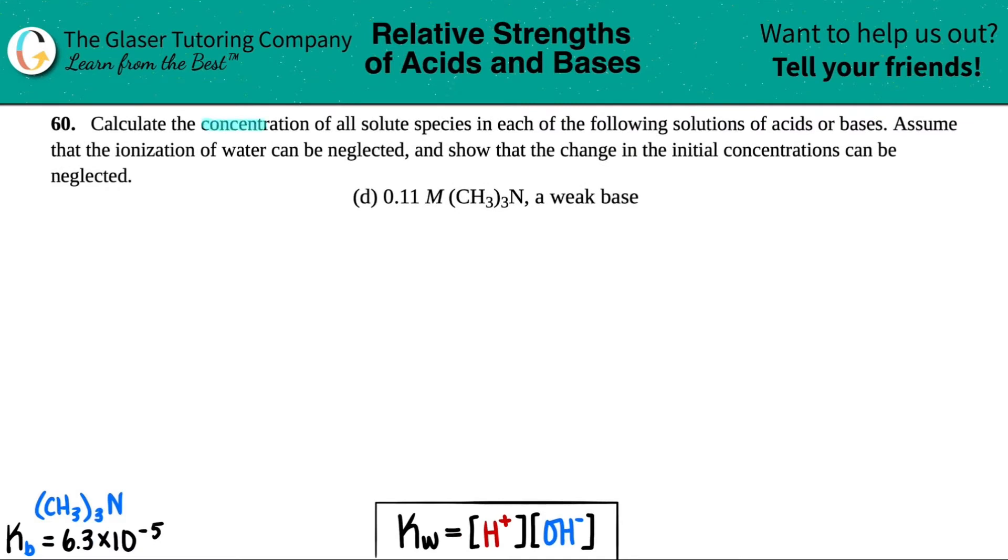Number 60, calculate the concentration of all solute species in each of the following solutions of acids or bases. Assume that the ionization of water can be neglected and show that the change in the initial concentrations can also be neglected. We have letter D, which is 0.11 molarity of trimethylamine, CH₃₃N, which is a weak base.